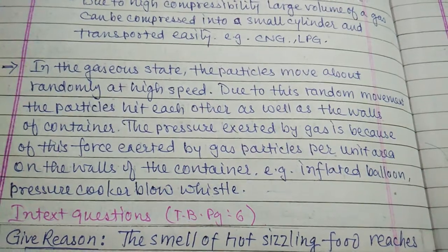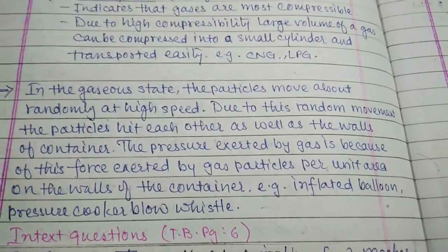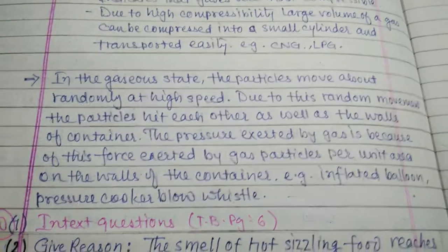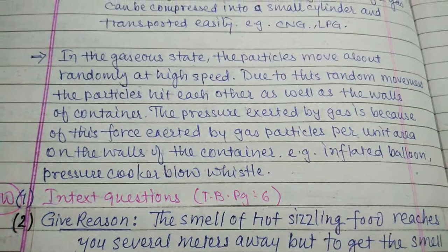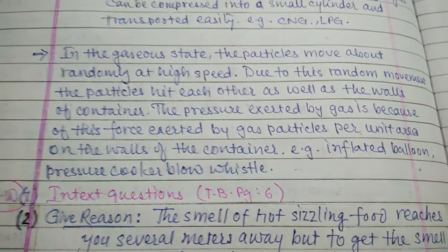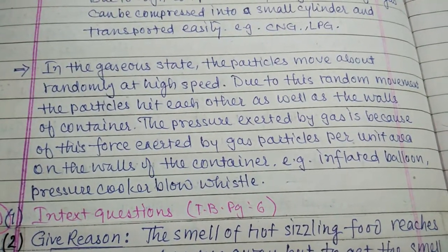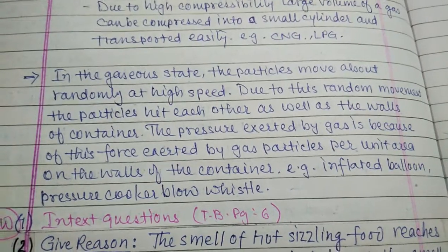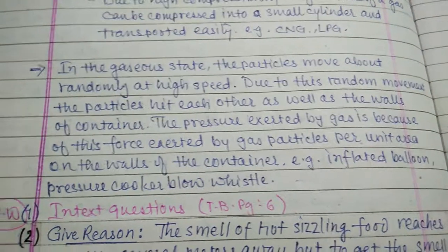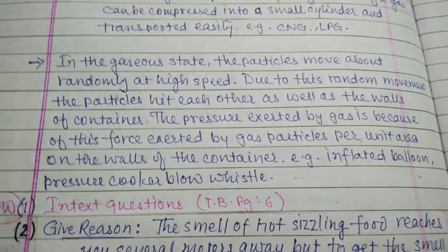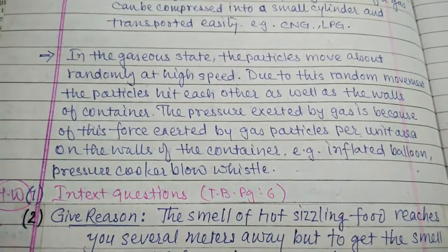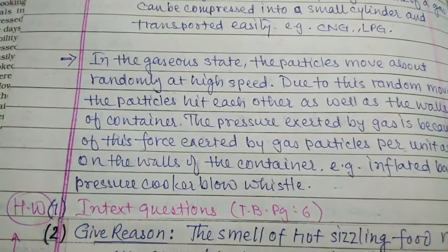For example, when we blow air into a balloon — either by mouth or with a pump — the balloon inflates. It inflates because the air particles inside not only interact with each other but also exert pressure on the walls of the balloon. Similarly, in a pressure cooker, when steam increases, it exerts pressure on the rigid walls. The whistle lifts slightly and high-pressure vapor escapes, producing a whistling sound. This demonstrates that gases are compressible.